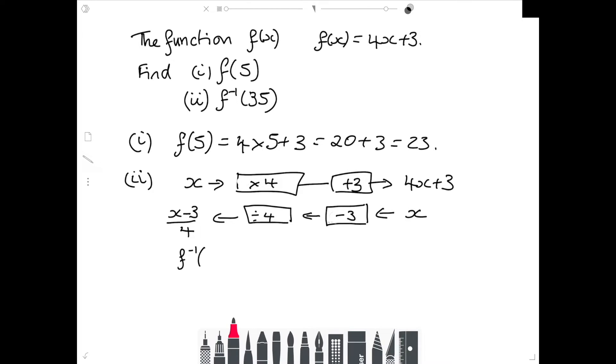So to find the value of the inverse function of 35, I have to do 35 take away 3 and then divide by 4, which is 32 divided by 4, which is 8.